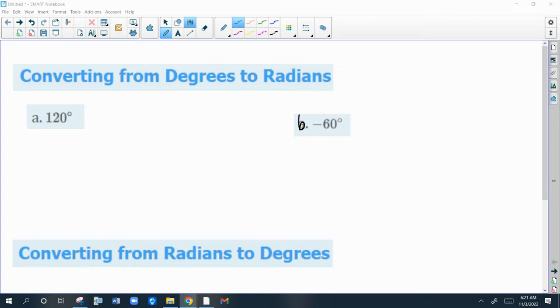In this video, we're going to practice converting angles from degrees to radians and vice versa. The big thing with degrees and radians is this conversion factor: 180 degrees is exactly equal to pi radians. That's all you need to know to do this.